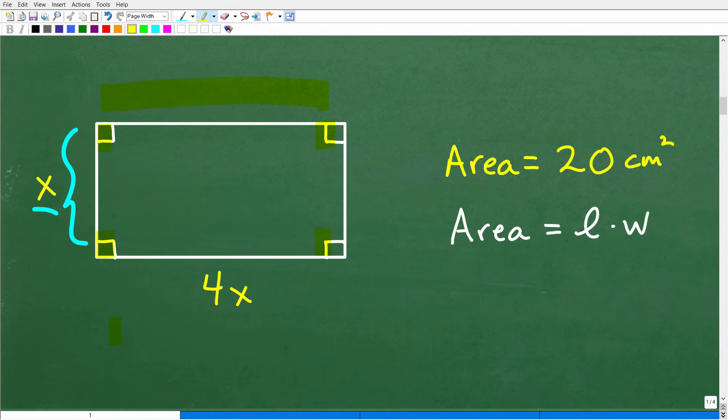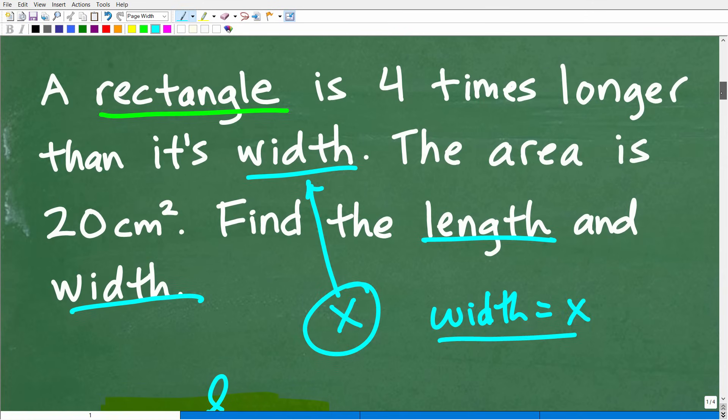Basically, opposite sides are congruent. In other words, the length over here is the same length over here. And over here, the width is the same length over here. So basically, if the width is X units long here, it's also X units long here. And the length is 4X. Now, why is this 4X? Well, hopefully you figure this part out because the length is four times longer than the width. Okay, so that is the length.